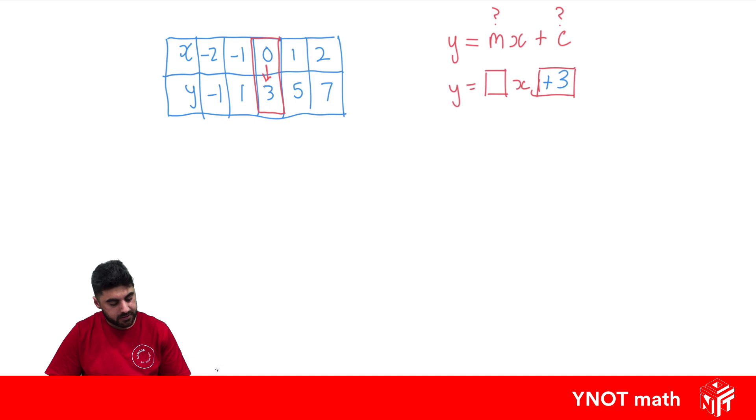And the number that needs to go in here, we can get from looking at the pattern for y. So what's happening to y? Minus 1, 1, 3, 5, 7. It's going up by 2, by positive 2. We're plussing 2 every time. And that's exactly what needs to go in the box before x, a positive 2. You don't have to write the positive because it's first. And that becomes our rule. y equals 2x plus 3.